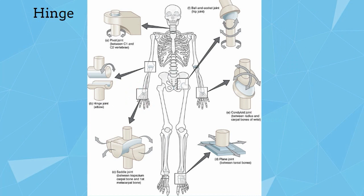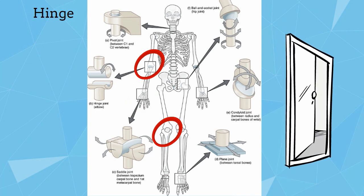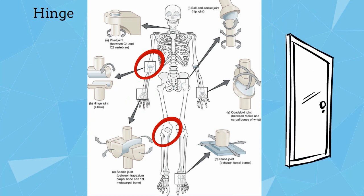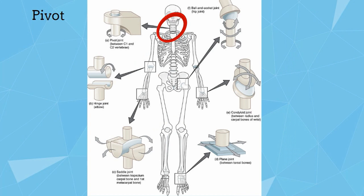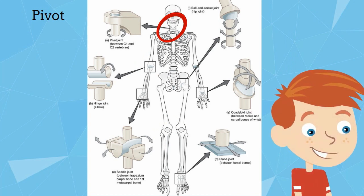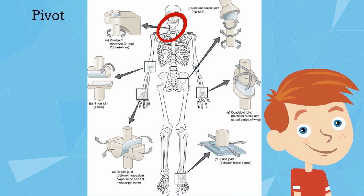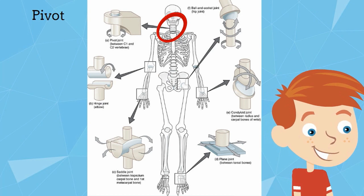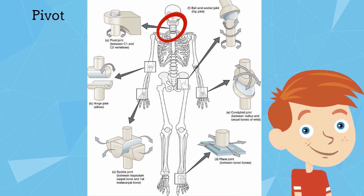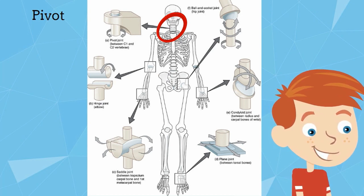Your hinge joint is found at your knees and your elbows and they allow movement back and forth. Finally, the pivot joint is found at your vertebrae and your skull. If you take your head and move it to the left and right and up and down, that is the movement caused by the pivot joint.